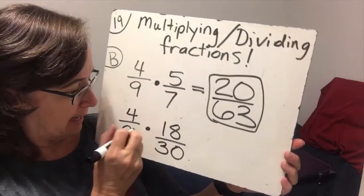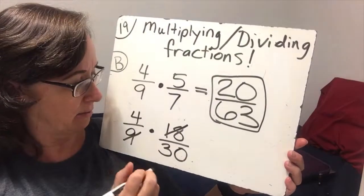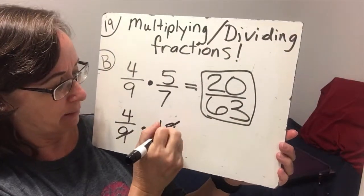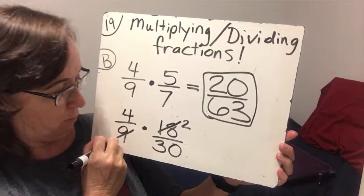So let's look at 9 and 18. 9 goes into 18 2 times. So I'm going to go ahead and say, well, 18 divides by 9 2 times, and 9 divides by 9 1 time. So I simplified.